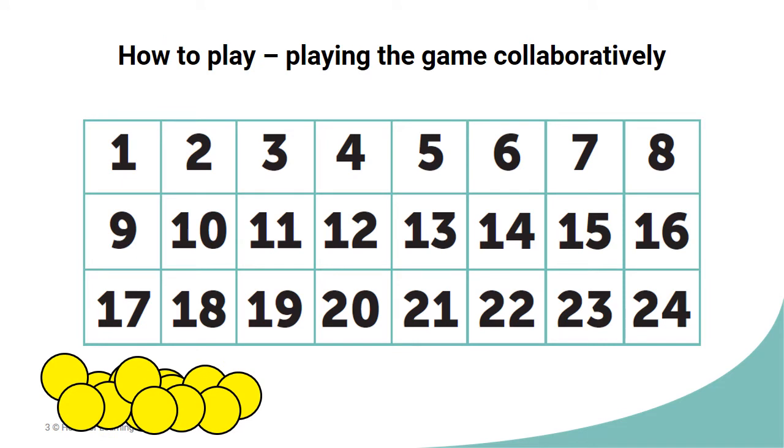Firstly, this is how to play the game collaboratively. The aim is to make the longest sequence of numbers. Each number in the sequence must be a factor or a multiple of the previous number, and the numbers can only be used once. It would be a good idea to write the numbers down as you go.